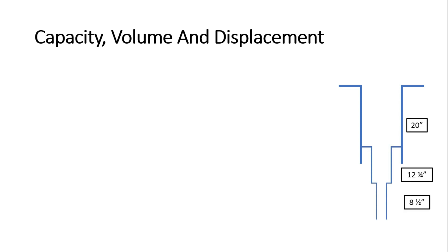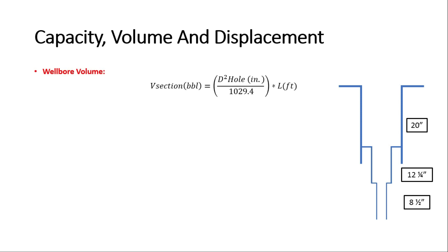Now let's jump into calculation of wellbore volume. Assume our well is already drilled and has several sections: cased hole with 20-inch diameter from ground level, open hole with bit size 12¼ inch, and open hole with bit size 8½ inch down to TD. We have three sections — one cased and two open holes. To calculate the volume of each section, use: (diameter²) / 1029.4 × L, where diameter is in inches and L is the length in feet. The result will be in barrels.